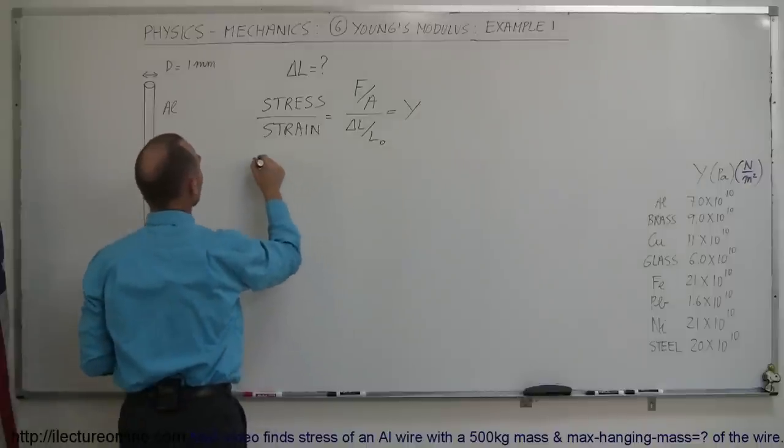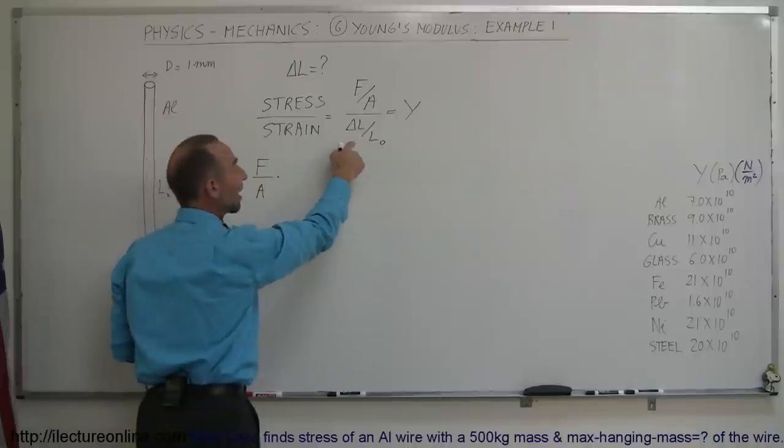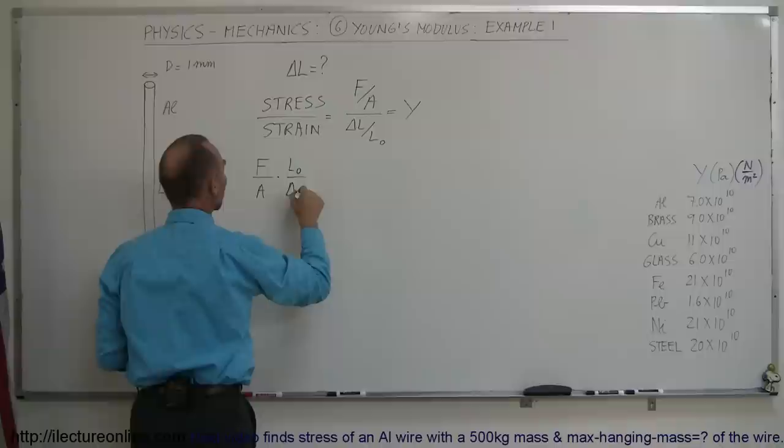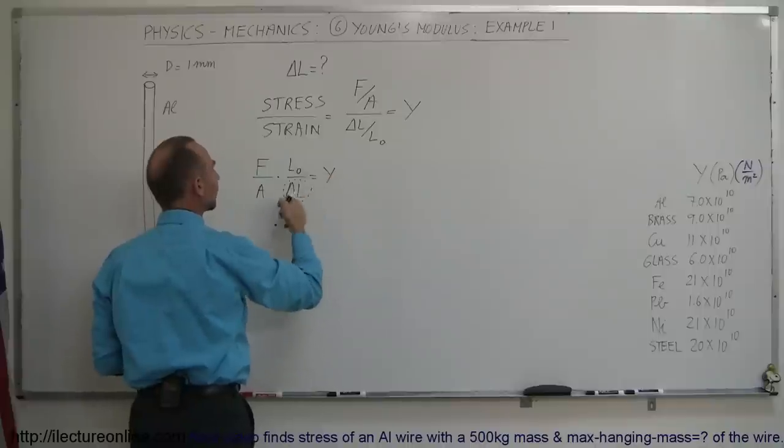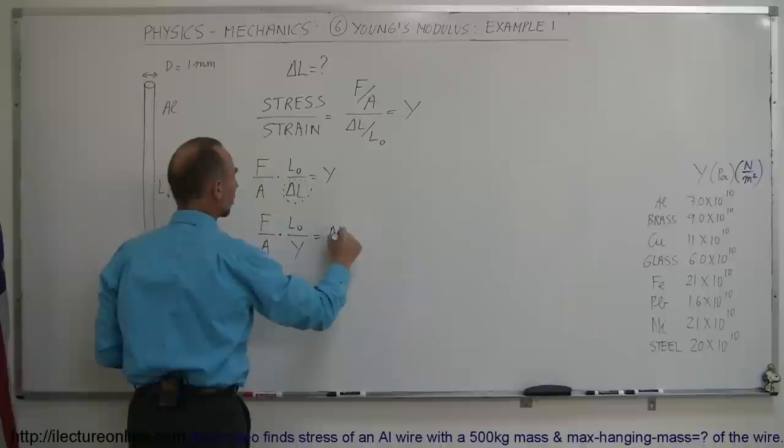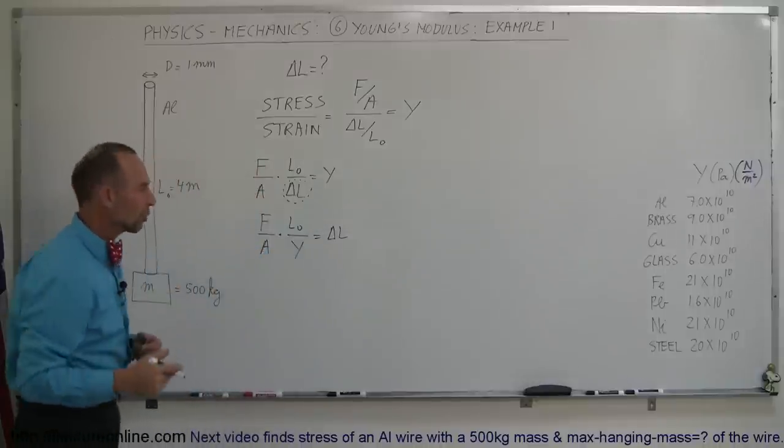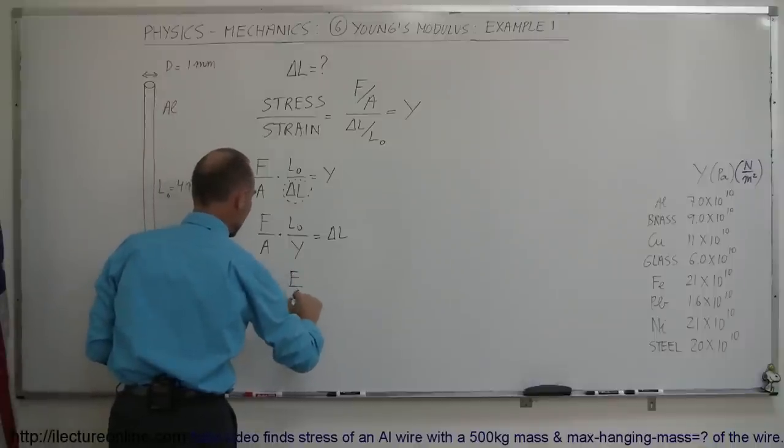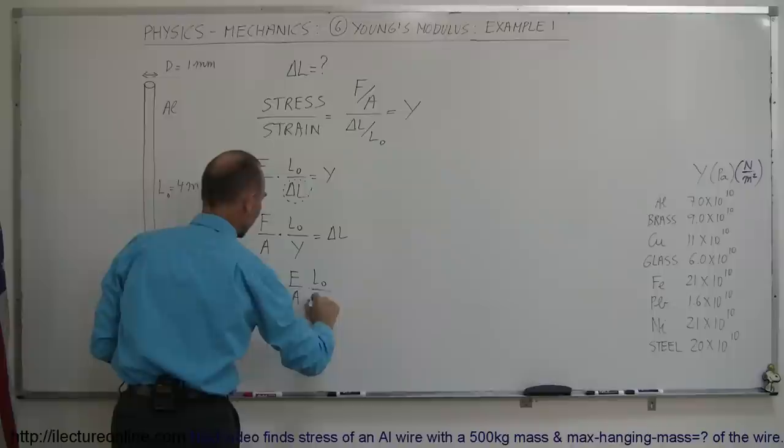So, taking that equation and writing it slightly differently, we can write force divided by area times, because instead of dividing by a fraction, we can multiply by its inverse. So, times the original length divided by the change in the length equals Young's modulus. And since we're looking for the change in the length, I'm going to cross-multiply, bring the Y over here, bring the delta L over there. So, force divided by area times L sub-naught divided by Young's modulus equals the change in the length. So, reversing the equation, turning it around, we can write delta L is equal to F over A times initial length divided by Young's modulus.